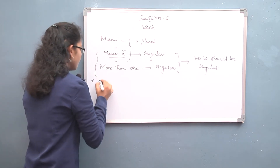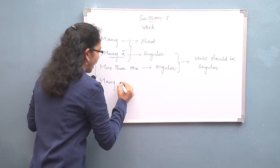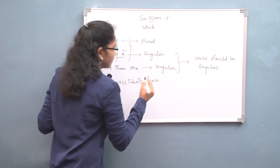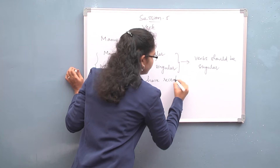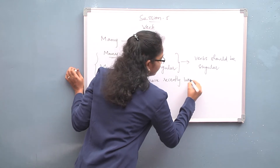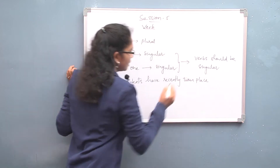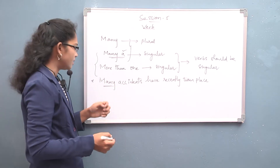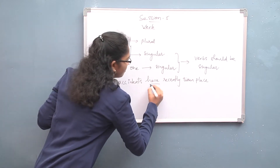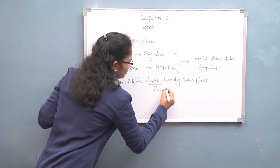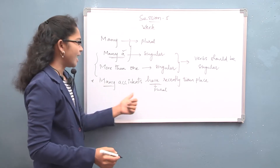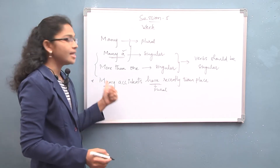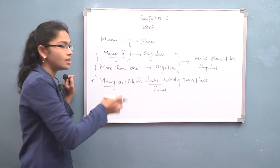For example: 'Many accidents have recently taken place.' Here we have only 'many', which means it is plural, so we use 'have'. This is correct — many accidents have recently taken place. We are not using 'many a' here, only 'many'.